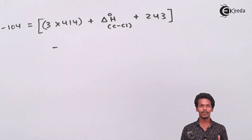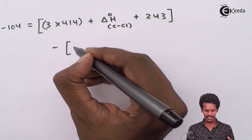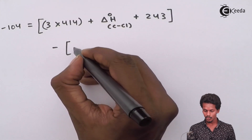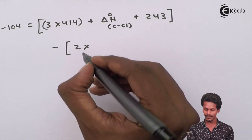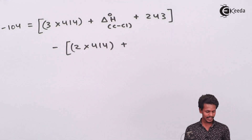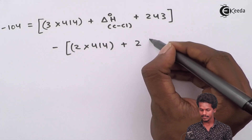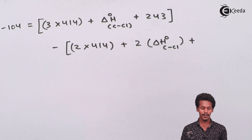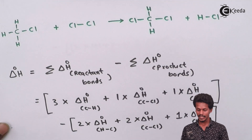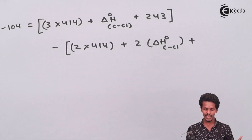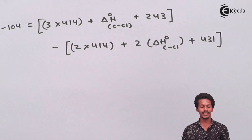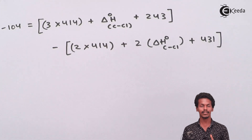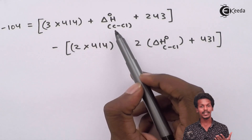Now we subtract the product bond enthalpies. The product side gives: 2 × 414 (for C–H bonds) + 2 × ΔH°(C–Cl) + 1 × 431 (for H–Cl). So the product side sums to 828 + 2 × ΔH°(C–Cl) + 431, which equals 1259 + 2 × ΔH°(C–Cl).